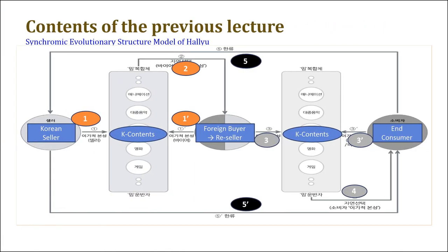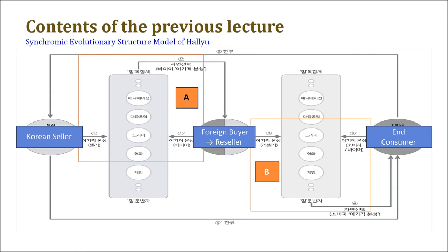In the last class, we found the self-organization process of synergetics in the synchronic evolutionary structure model of Hallyu. We found the circulation process leading number 1, 1 prime, 2, number 3, 3 prime, 4, and number 5, 5 prime. We also confirmed the fractal structure and self-similarity — the small squares A and B resemble each other — in the synchronic evolutionary structure model of Hallyu.